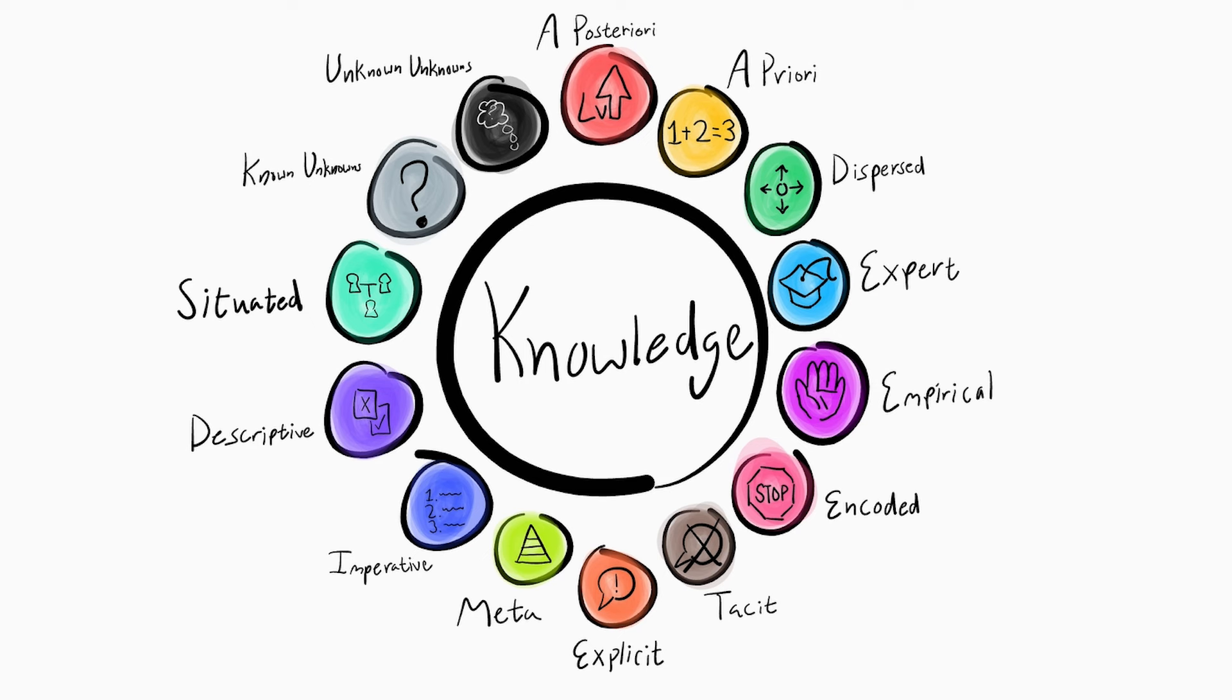Tacit knowledge. Tacit knowledge is knowledge that you have but are not able to express. You might call this intuitive knowledge. An example of this would be someone with emotional intelligence. They may have good communication skills to make others feel welcome, but they may not be able to explain how exactly they do that. So because they can't explain it, it's tacit knowledge.